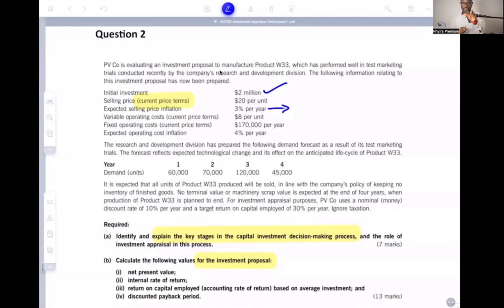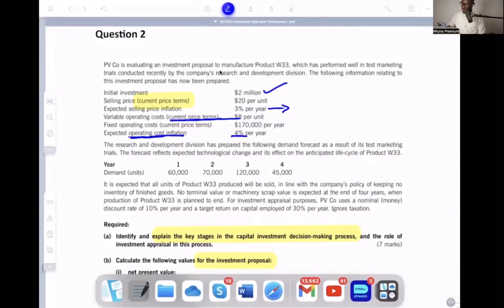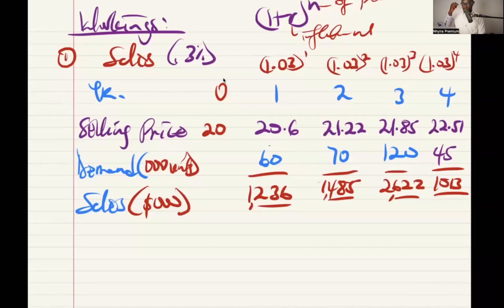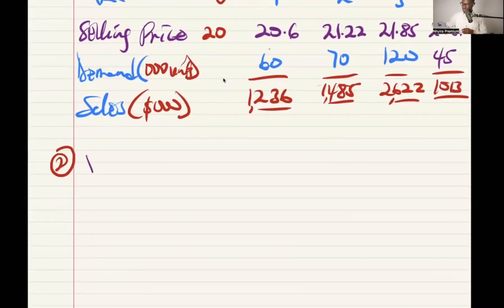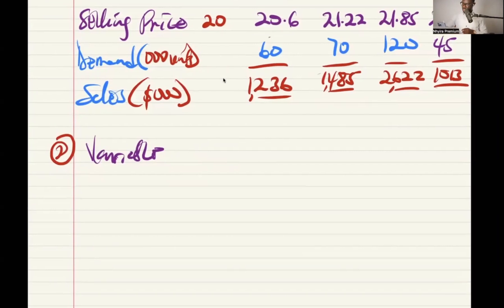So we multiply up and that is what gives us the sales revenue, which will go to our NPV schedule. So that will be in dollars 1,000. So 1,236; 1,485; 2,622; 1,013. So that's our sales figure. Then we go to the next item. So variable operating costs. Again, they said current price. So variable operating costs. Then it says expected operating costs inflation is 4%. So it means the variable operating costs also we have to work on it to get it inflated for our final answer.